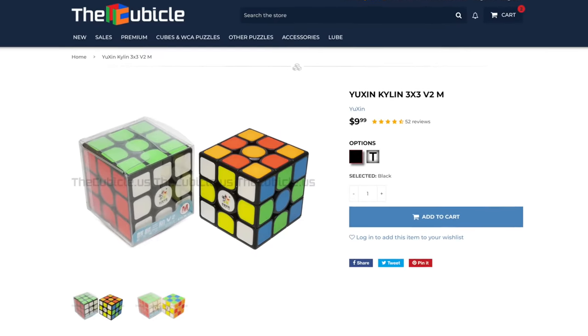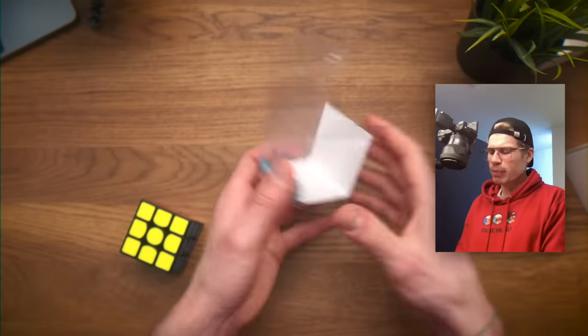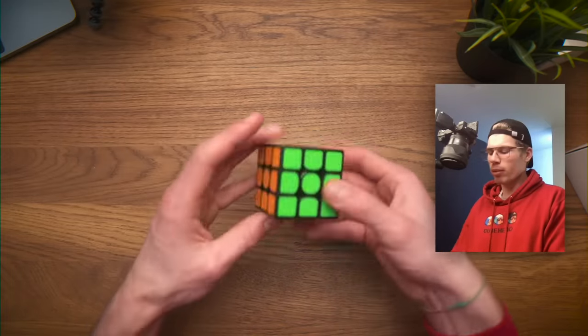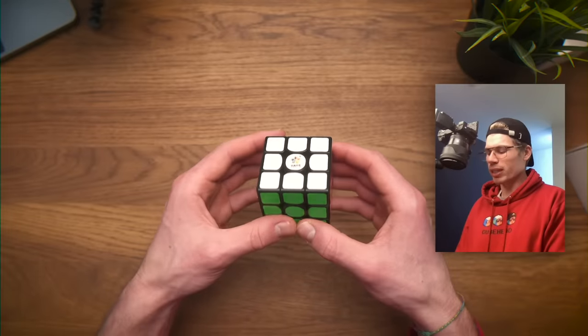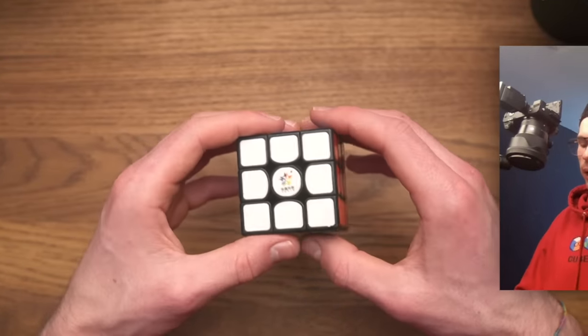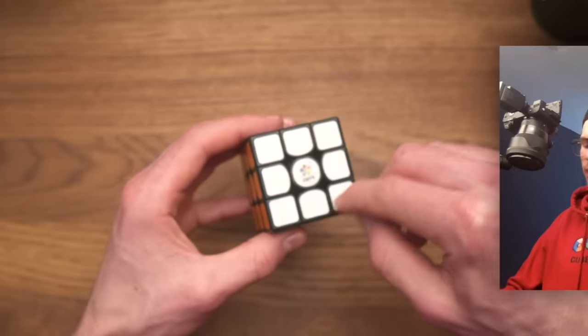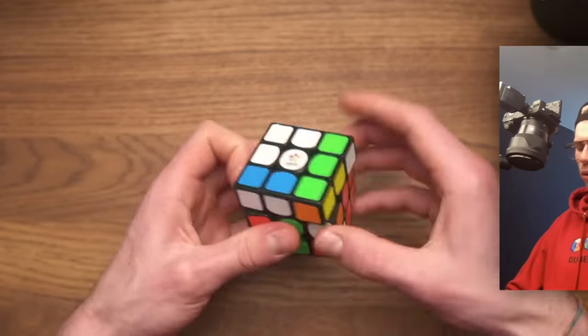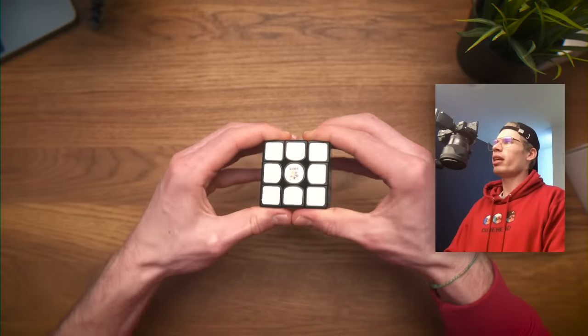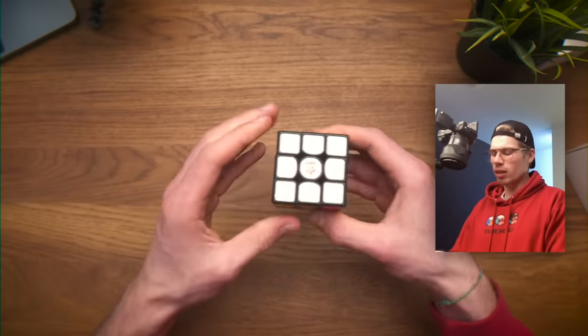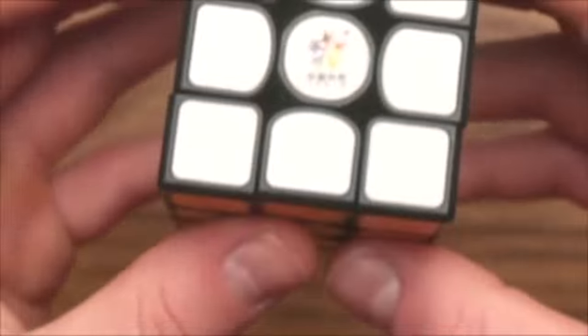Then we have the Kylin V2. I've heard good stuff about this one. Guys, please don't use plastic boxes. Can someone just fix the plastic problem and make a wooden cube or something? What makes this cube special is that it's actually a tiled cube. It doesn't have stickers but still has the stickered look.